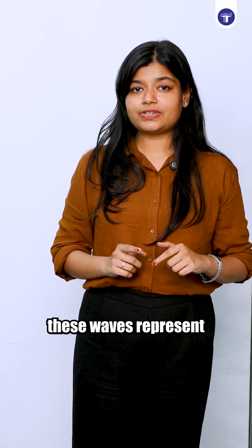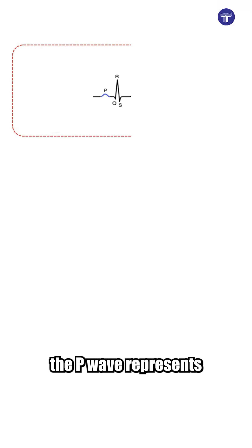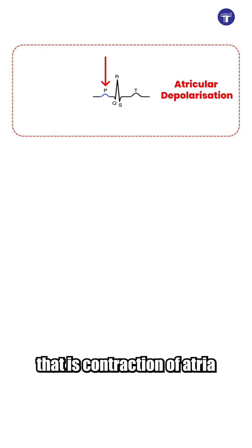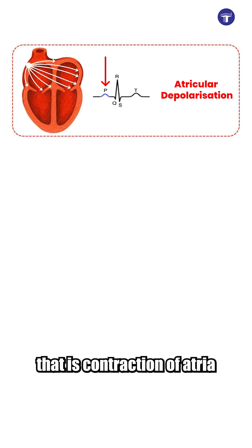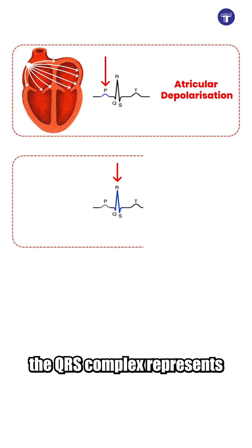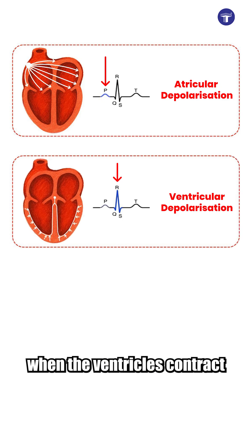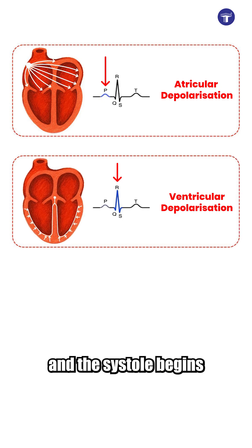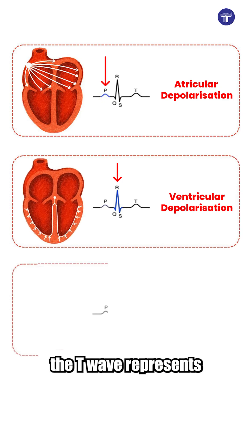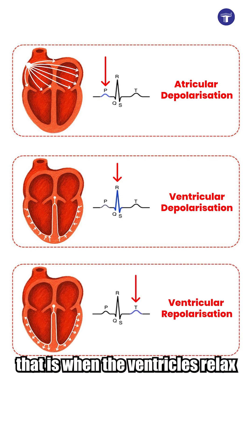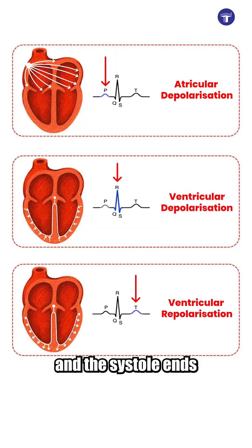Let's see what these waves represent. The P wave represents atrial depolarization, i.e. contraction of atria. The QRS complex represents ventricular depolarization, i.e. when the ventricles contract and the systole begins. The T wave represents ventricular depolarization, i.e. when the ventricles relax and the systole ends.